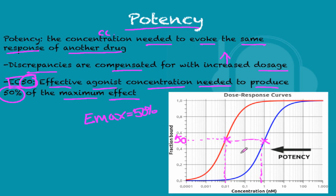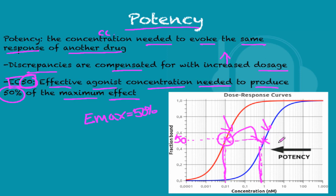This drug is more potent than this drug because the EC50 is at a lower concentration, whereas the same effect of the other drug requires a much higher concentration — so one is highly potent and the other is not so potent.